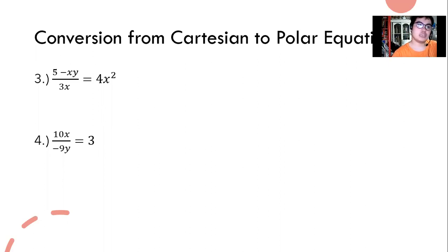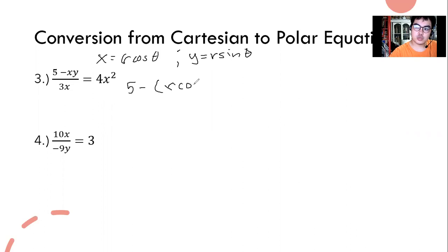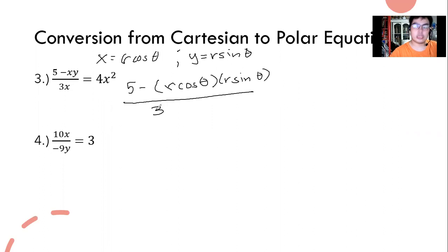We're going to do the same procedure for the next item. Our x is r cosine theta, and y equals r sine theta. What we're going to do here is substitute as usual — substitute, then evaluate — just like what we did back in grade 7.